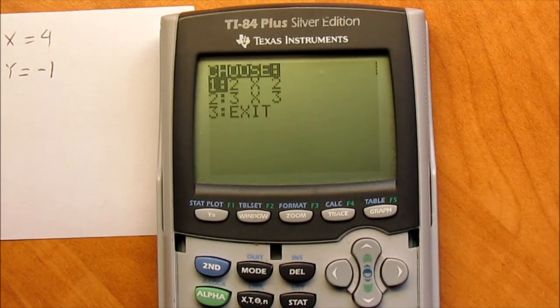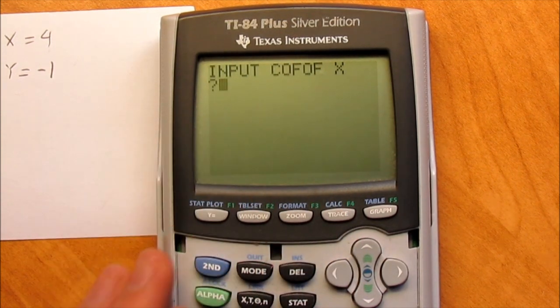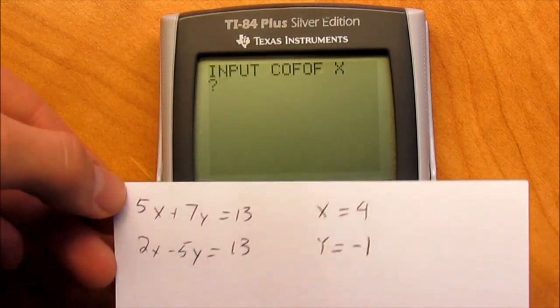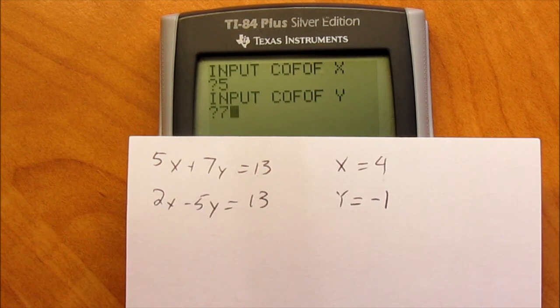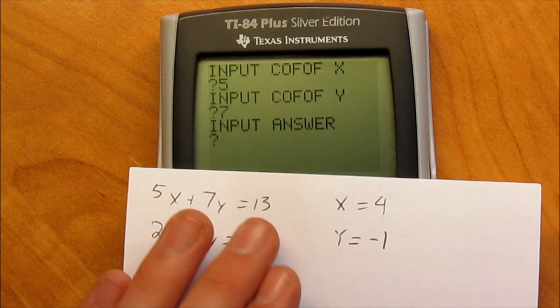So we're going to choose, that's a 2x2. So we're going to choose 2x2. So it says input coefficient of x. So as we saw, coefficient of x is 5. So let's go ahead and do that. 5. Enter. Input coefficient of y. Now that's 7. Now it says input answer. The answer is 13.